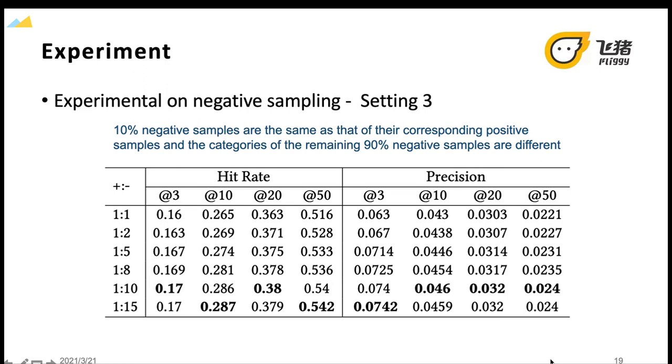The setting 3: we make sure that only 10% negative samples have the same categories as that of their corresponding positive samples, and 90% negative samples have different categories compared with that of their corresponding positive samples. The experimental results is shown in this table.